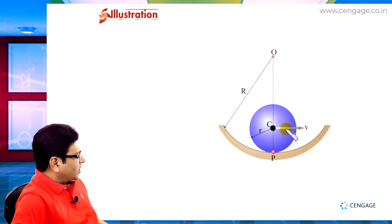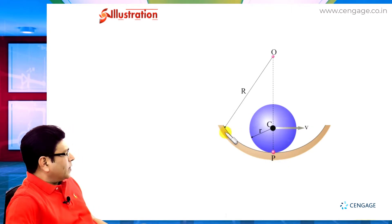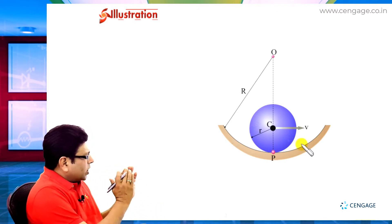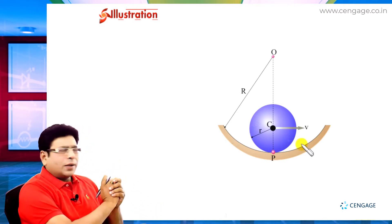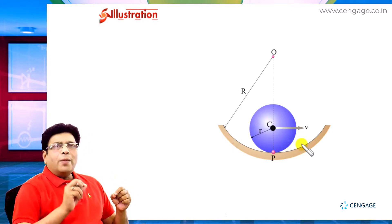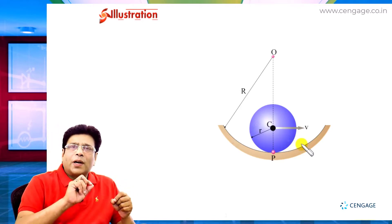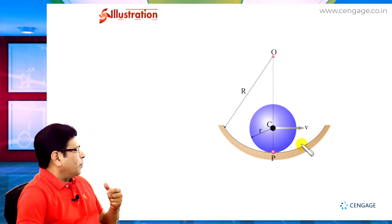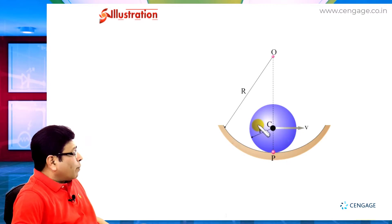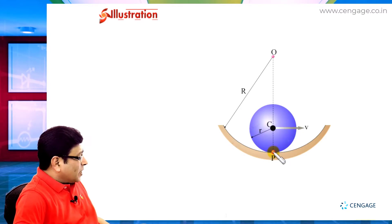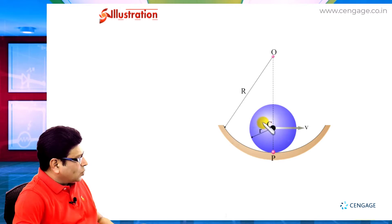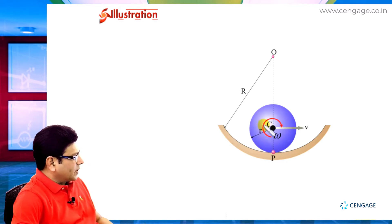Let us make the diagram. This is a fixed track — it is not moving — and our cylinder is rolling over the curve surface. Our point p is in contact with the curve track. That means the velocity of point p should be zero because it is the case of pure rolling. For making the net velocity of point p zero, the rotation sense of this cylinder should be clockwise. Let us assume the angular velocity of the cylinder is omega.